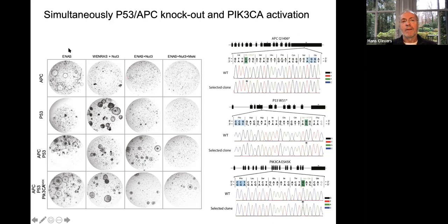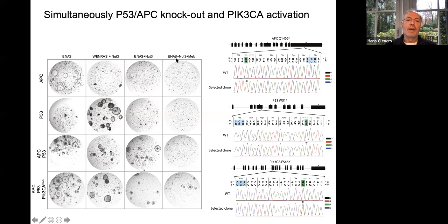We can then play the selection trick: remove growth factors to select for APC mutants, use a MEK inhibitor to select for PI3-kinase mutants, and add Nutlin to select p53 mutants. Selecting with all three at the same time still yields clones with all mutations. Selecting with two typically finds organoids only harboring mutations in those specific pathways. Very rapidly, you can create a large collection of organoids with all desired genotypes for any functional assay.